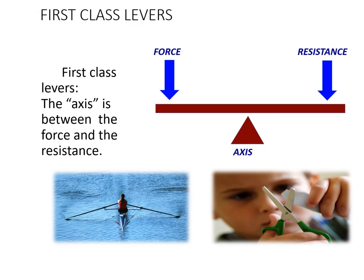First class levers have the axis in the middle. It doesn't matter which side the force and the resistance are — if the axis is in the middle of those three components, it's a first class lever. Looking at the two images shown — scissors and rowing — think about where the axis, resistance, and force are located before moving on.